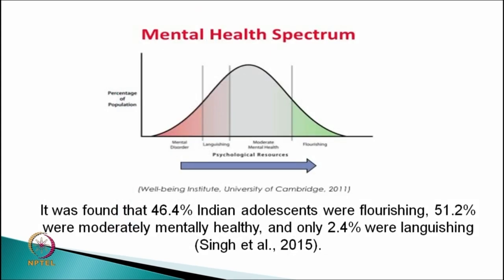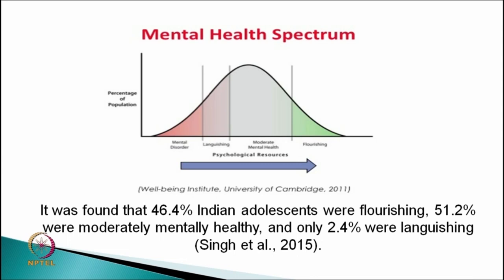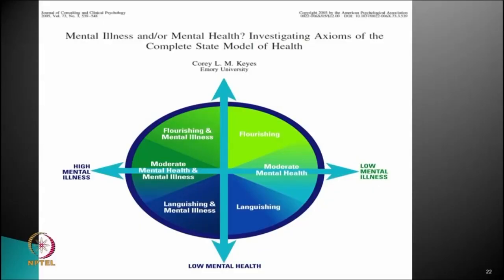This is the way to define the mental health continuum, ranging from mental disorders, to languishing, to moderate mental health, to flourishing. We had one recent research paper following this model with data from Delhi private schools. We cannot generalize to the Indian adolescent population, but we found that 46.4 percent of Indian adolescents were flourishing, 51.2 percent were moderately mentally healthy, and only 2.4 percent were languishing — quite good results, comparable with US data.